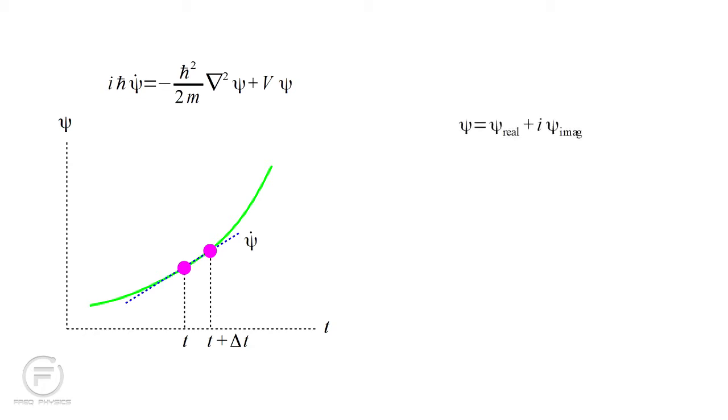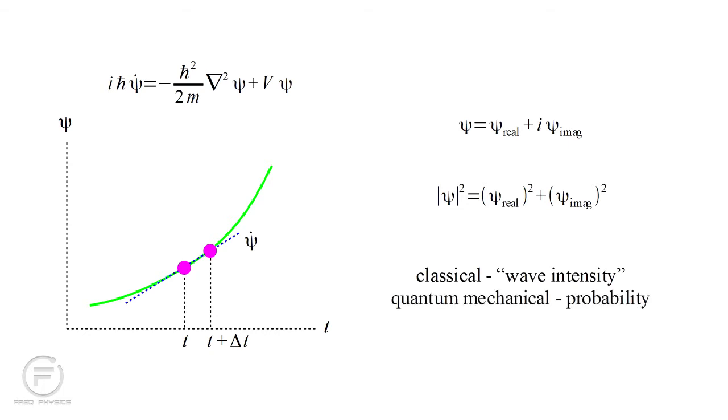Remember from part A that the wave function, bizarrely, has both a real part and an imaginary part. Our animations will be of the sum of the squares of these. In a classical theory, this would represent a wave intensity, like the intensity of light. In quantum mechanics, it turns out to represent the probability of finding an electron at some point in space.